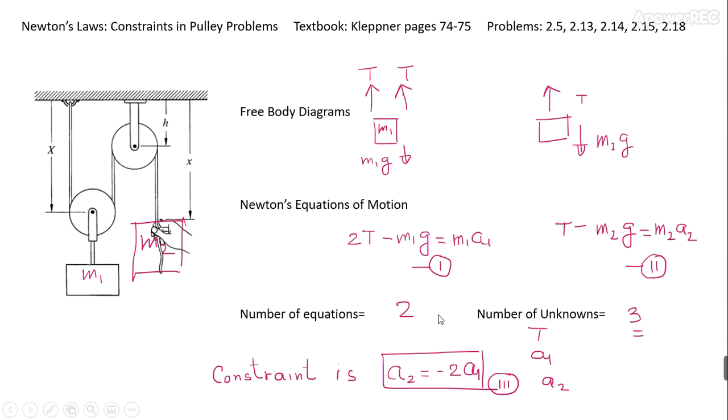And I've listed the unknowns here and there is a mismatch. I'm sure that many of you would have guessed the constraint equation: that is, the acceleration of this object m2 is opposite to the acceleration of m1. Therein lies the minus sign and double the acceleration of m1. So let me just, for completeness sake, draw the coordinate system here.